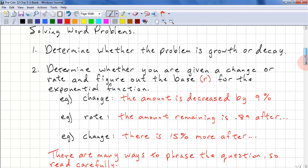So if we're given something like the amount is decreased by 9%, that is a change. So what we have is r equals 1 minus 0.09. 1 meaning it's a whole or 100%. And 100% minus 9% is 91% and that's 0.91. Now when we're given something like the amount remaining is 0.89 after dot dot dot, that's actually a rate. We don't have to subtract anything. We just use the ratio.